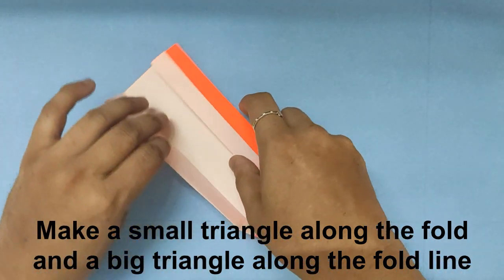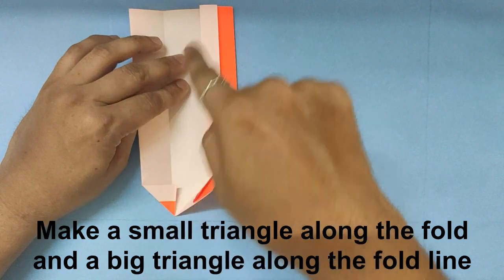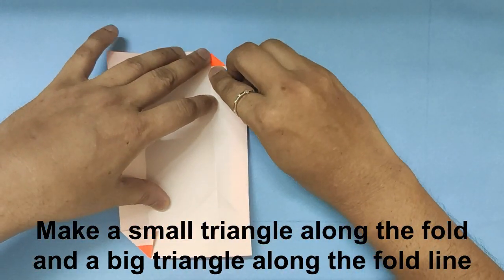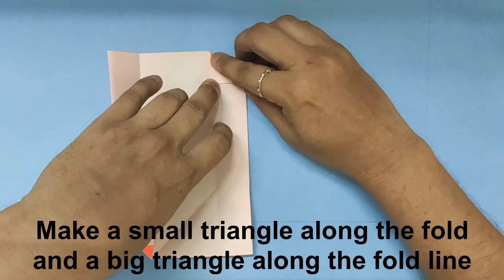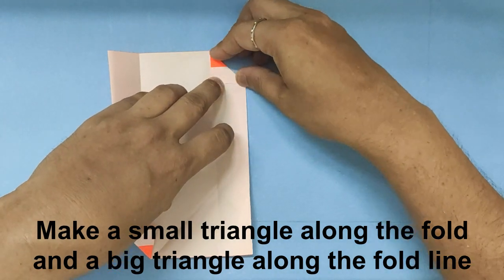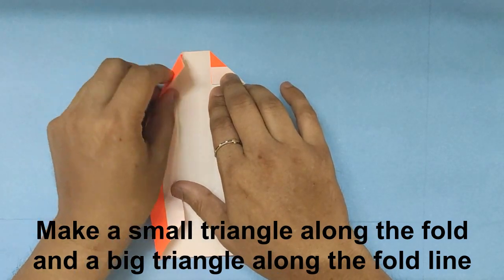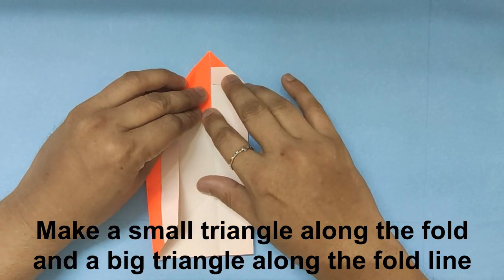Do the same thing on the bottom left hand. So just rotate it. Make a triangular fold along the crease line, and then another triangular fold which is a bigger triangle.